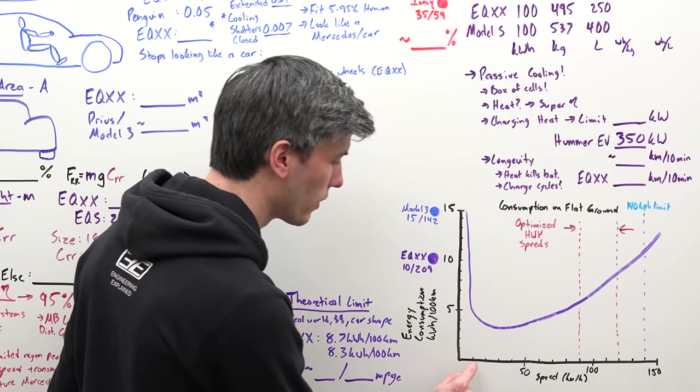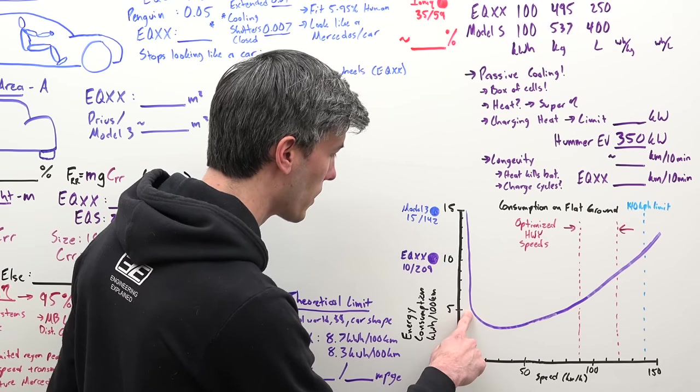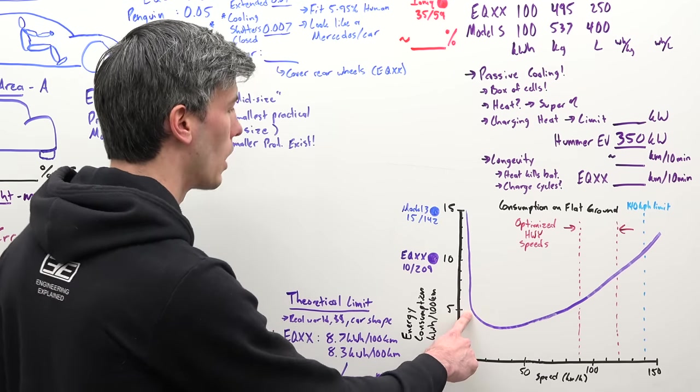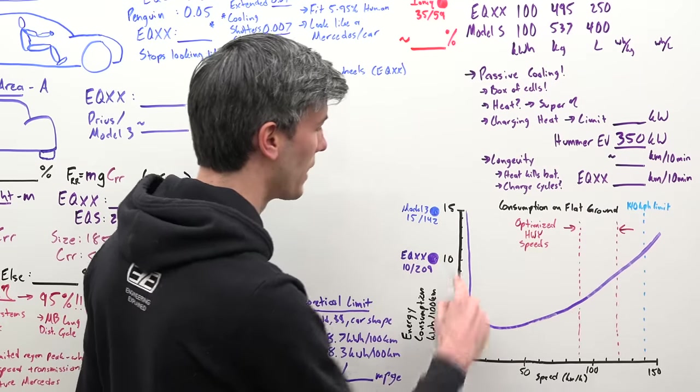For example, if we're traveling 10 kilometers per hour, our energy consumption is about 5 kilowatt hours per 100 kilometers. So why does this have the shape that it has?